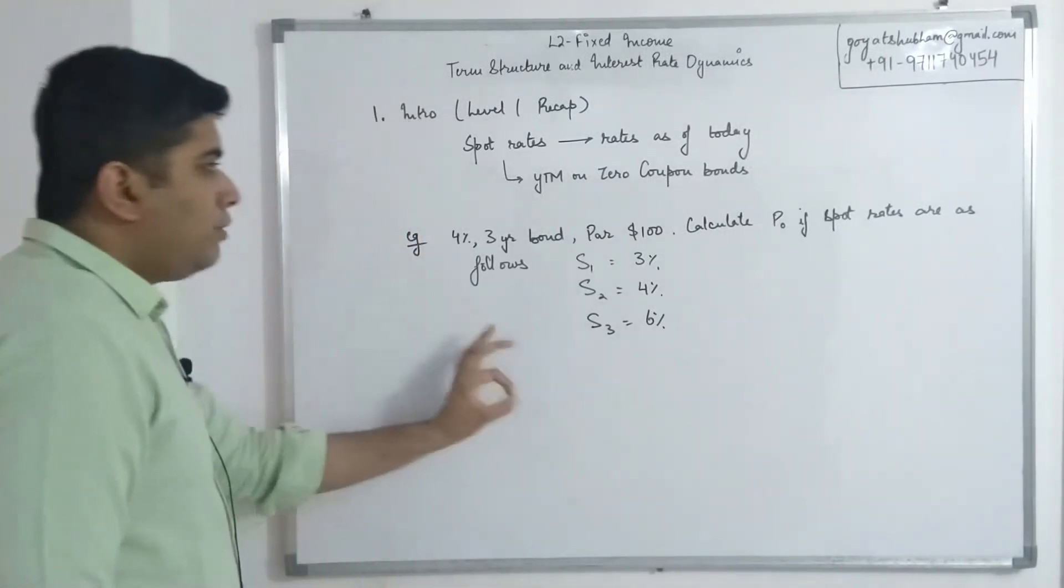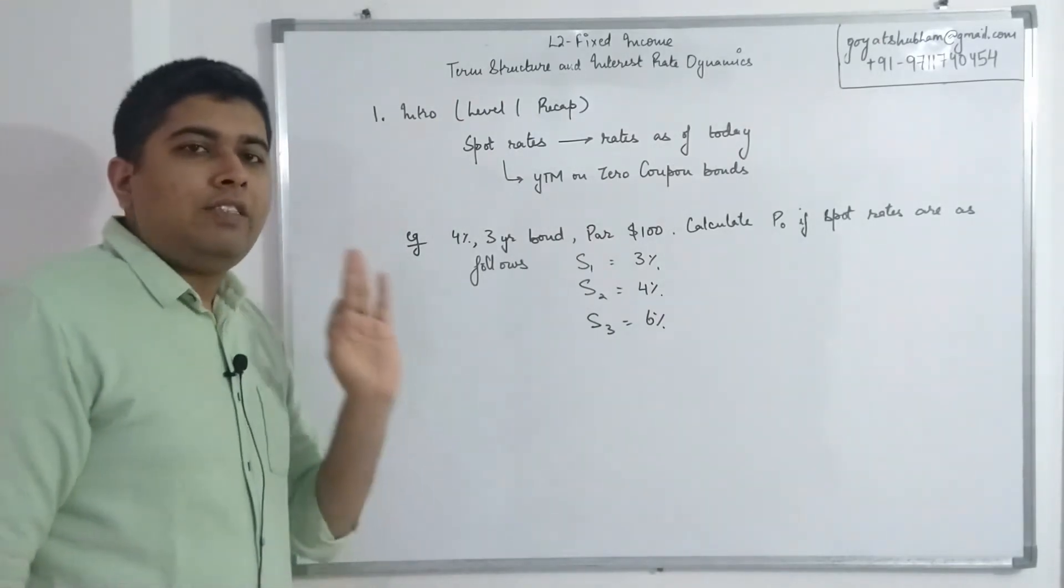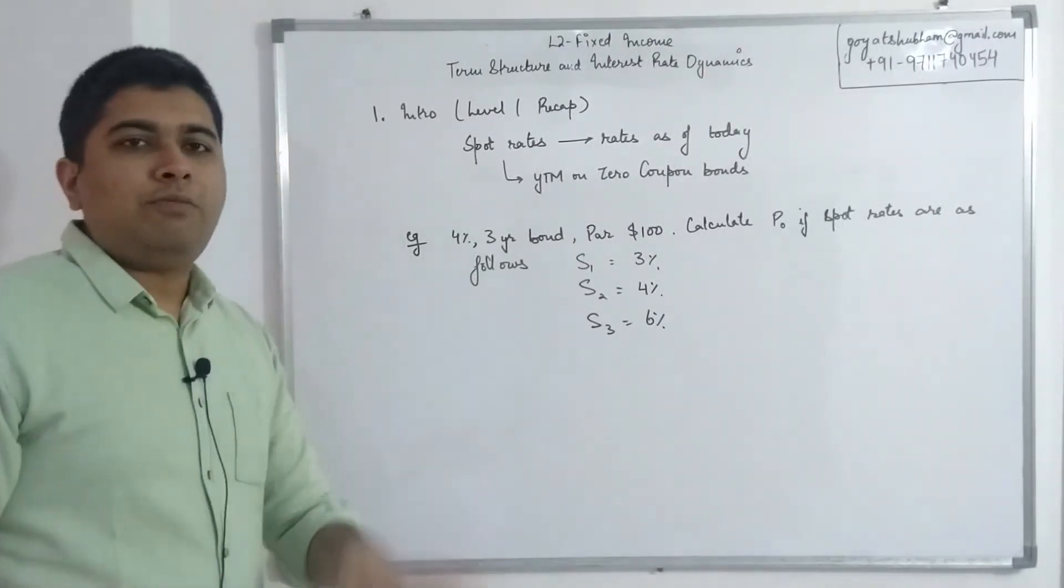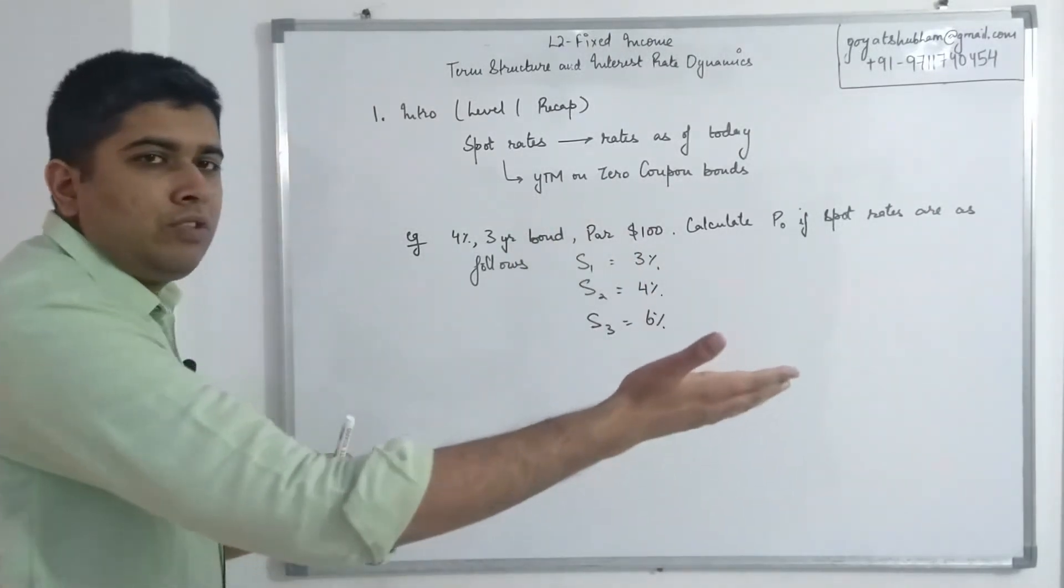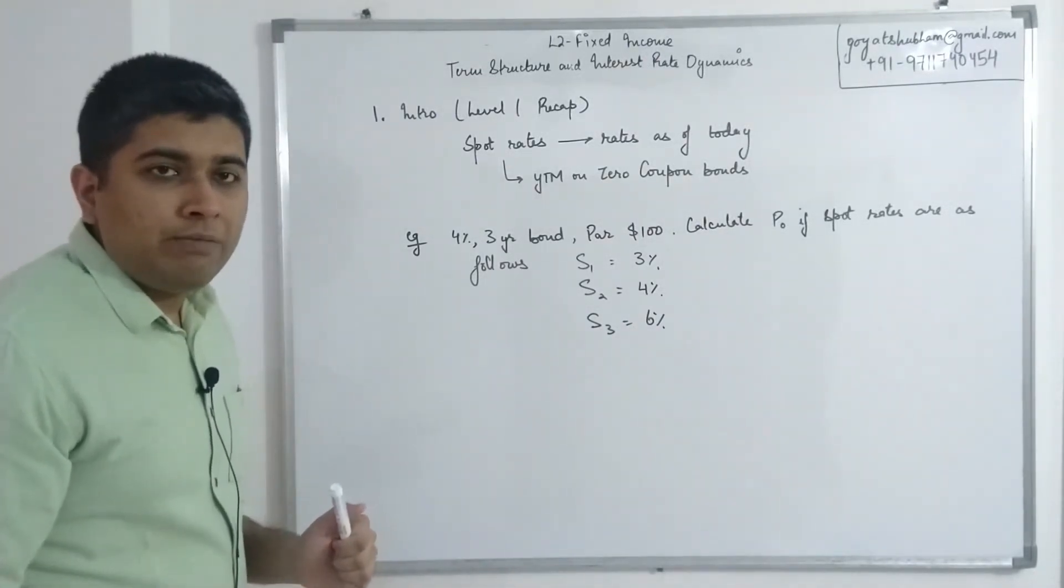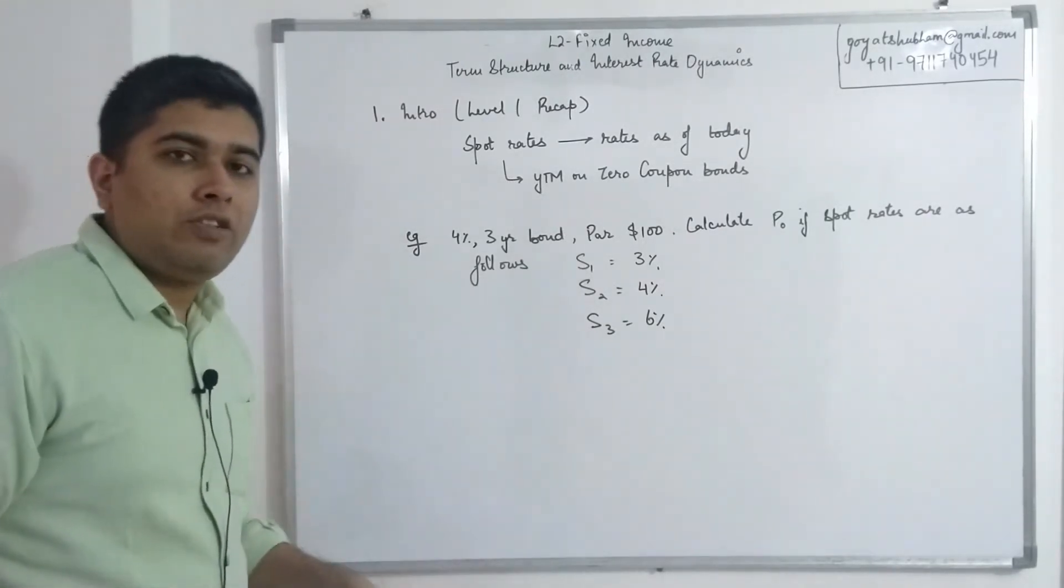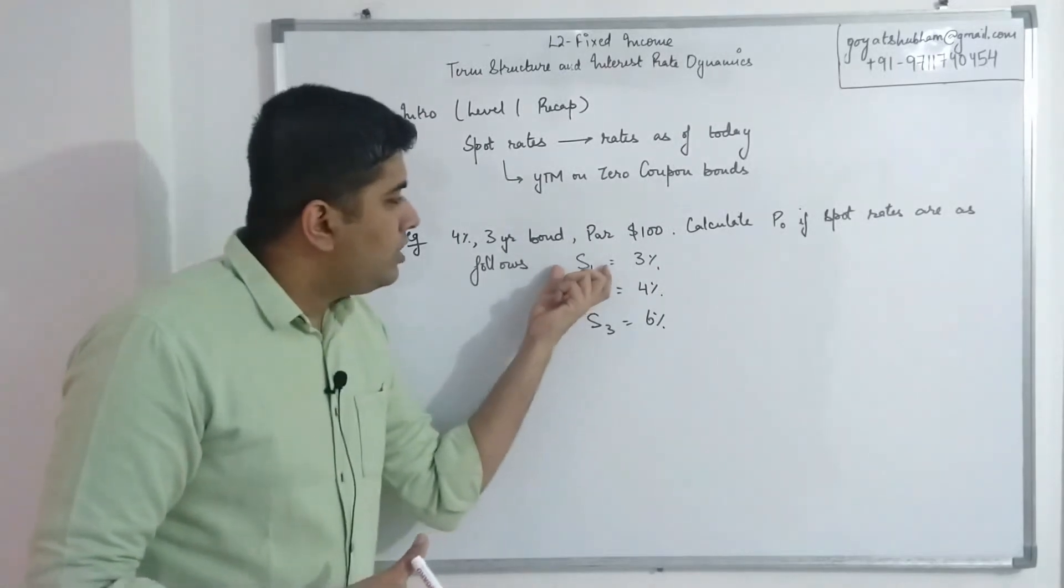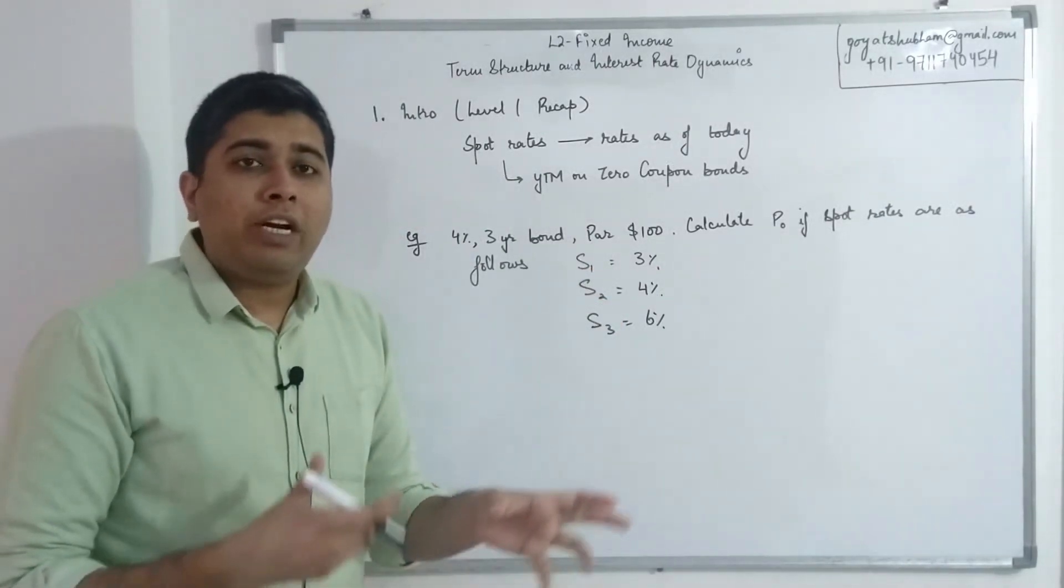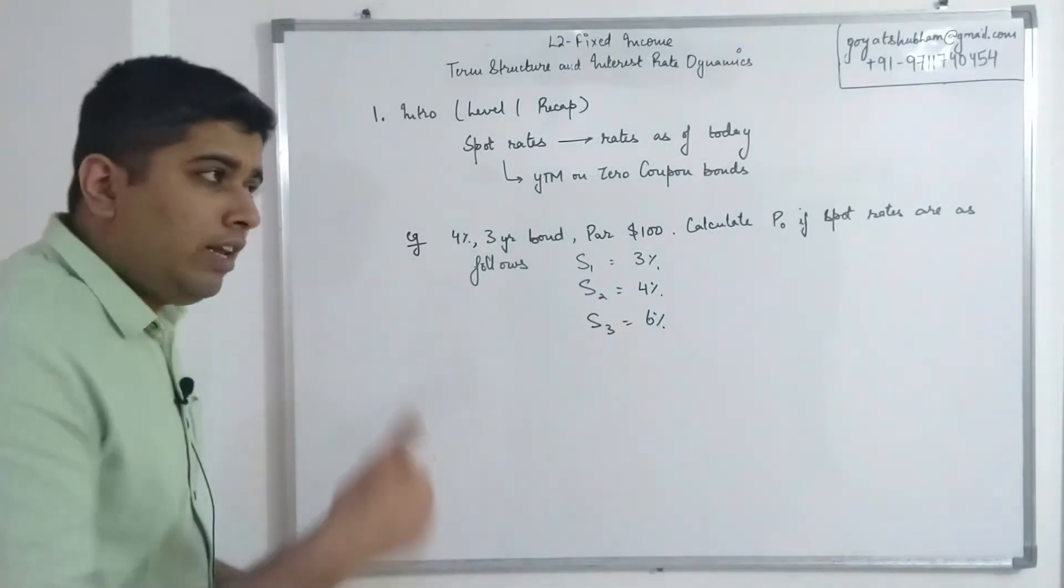Now aside from this, the valuation technique is exact same thing that you have done a million times from time value of money. All the future cash flows discounted with the relevant rate. Now at level one that relevant rate was same - it was YTM. Over here we'll have relevant rate as spot rate. So first year cash flows would be discounted with the first year spot rate, second year cash flows would be discounted by two year spot rates, and third year cash flows with three year spot rates. Let's look at the solution.